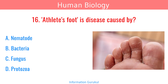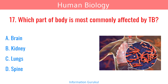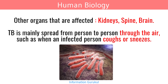Athlete's foot is a disease caused by fungus. Which part of the body is most commonly affected by TB? Lungs. Other organs that are affected are kidneys, spine, and brain. TB is mainly spread from person to person through the air, such as when an infected person coughs or sneezes.